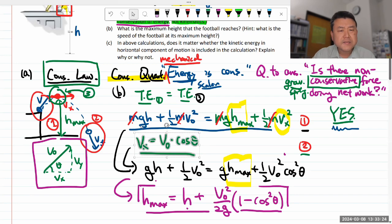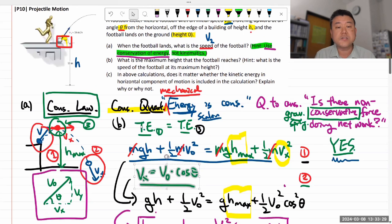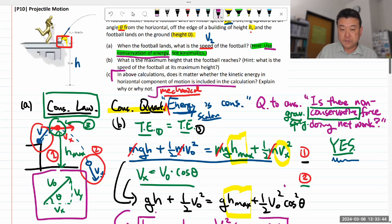Part C asks, in above book calculations, does it matter whether the kinetic energy in horizontal component of motion is included in the calculation? Explain why or why not? Let me give you the answer and leave it as an exercise for you. So the answer, you know, short answer here is no. It doesn't matter.